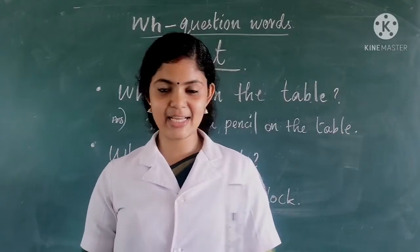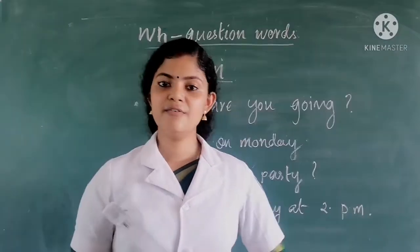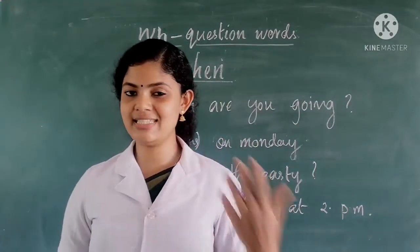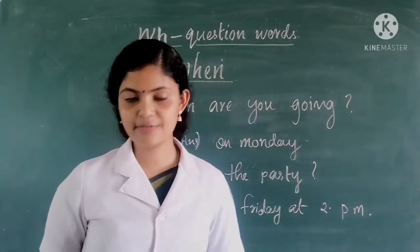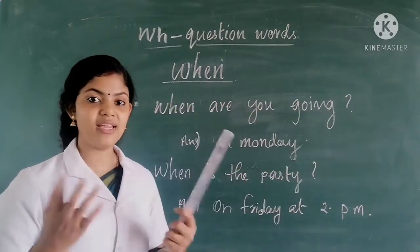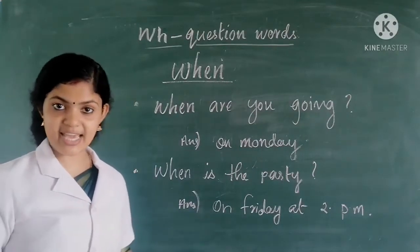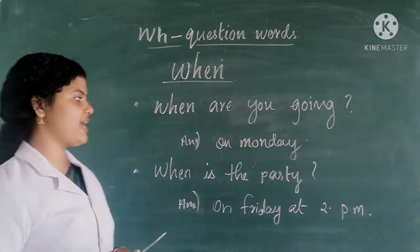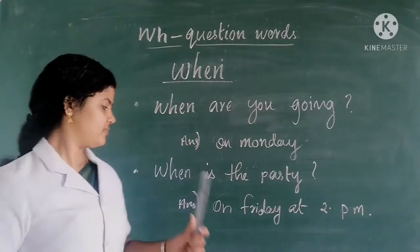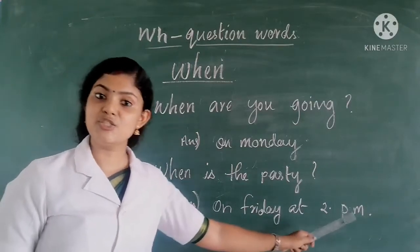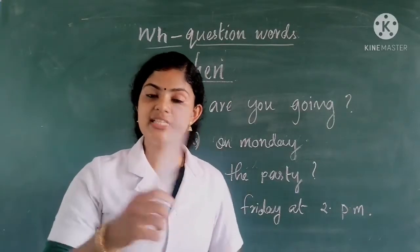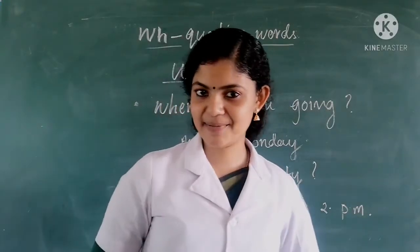Now let's discuss the next WH question word — WHEN. We use the question word WHEN to know about a time or a day. For example: When are you going? Answer — on Monday. Next: When is the party? Answer — on Friday at 2 p.m. We use WHEN to ask about the time or day.